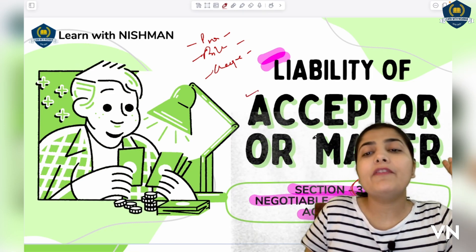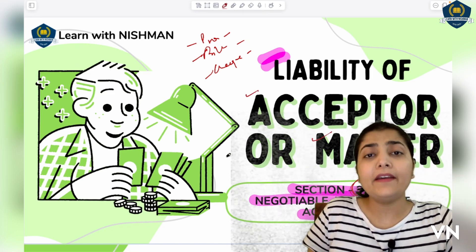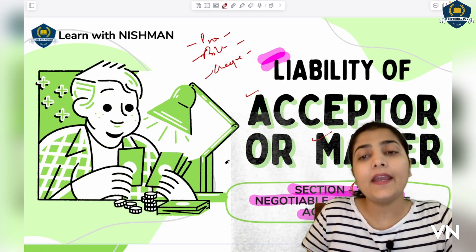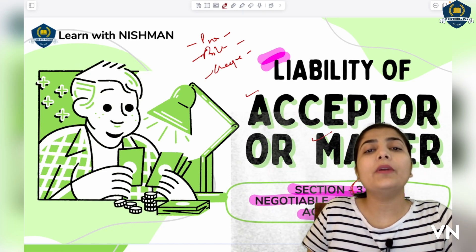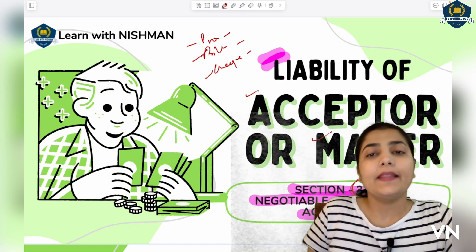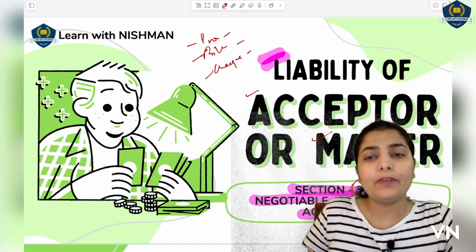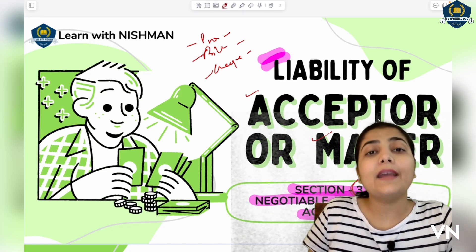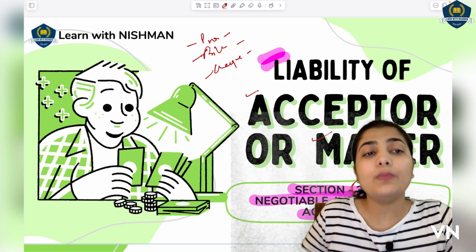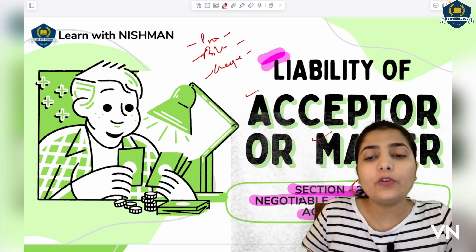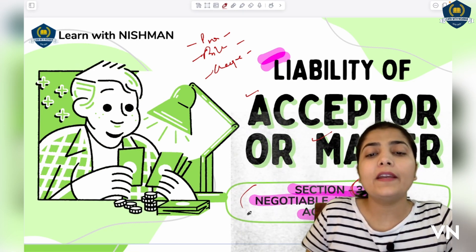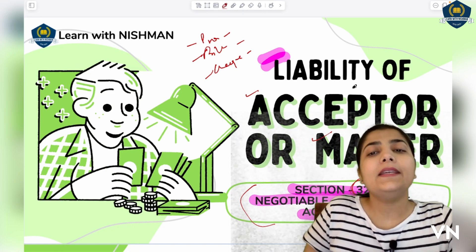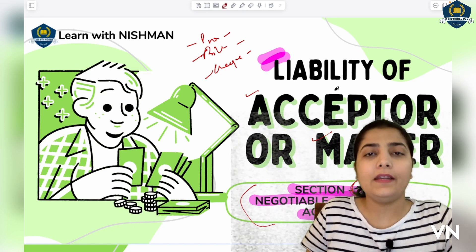The maker is the one who actually creates or writes the promissory note, and the acceptor is the one who accepts the promissory note or bill. These are the different parties, and now we will see what their liabilities are — what responsibilities arise when something goes wrong in dealing with the negotiable instrument. This liability will always remain on them.